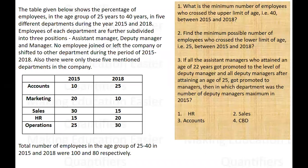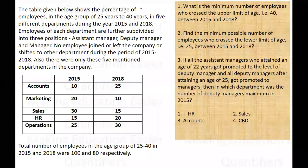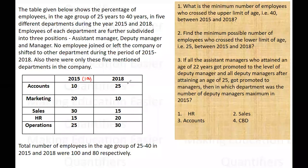Further, it is given that employees of each department are further divided into three positions: assistant manager, deputy manager, and manager. No employee joined or left the company or shifted to any department during these two years. The total employees in the age group of 25 to 40 in 2015 is over 100, and here they are 15 in number.